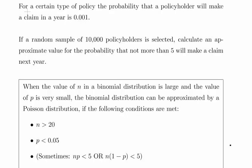Let's look at the question: for a certain type of policy, the probability that a policyholder will make a claim in a year is 0.001, which is one in a thousand. If a random sample of 10,000 policyholders is selected, calculate an approximate value for the probability that not more than five will make a claim next year.